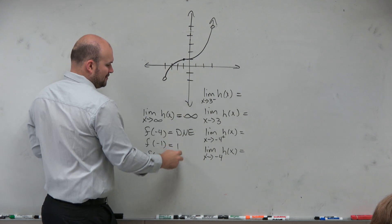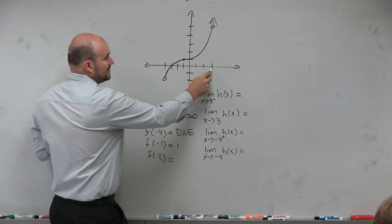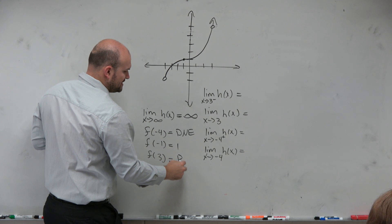f of negative 1, you can see that value is 1. f of 3, 1, 2, 3. Again, there's another hole, so we'd say it does not exist.